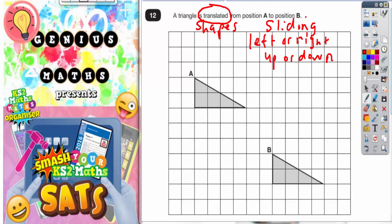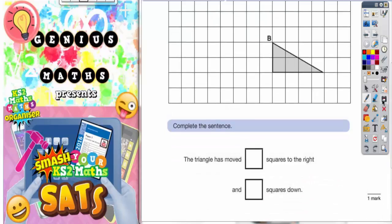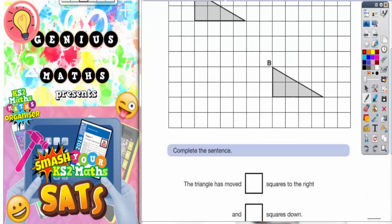So let's see what it says we've got to do. Complete this sentence. The triangle is moved blank squares to the right and blank squares down. Let's go back up here.